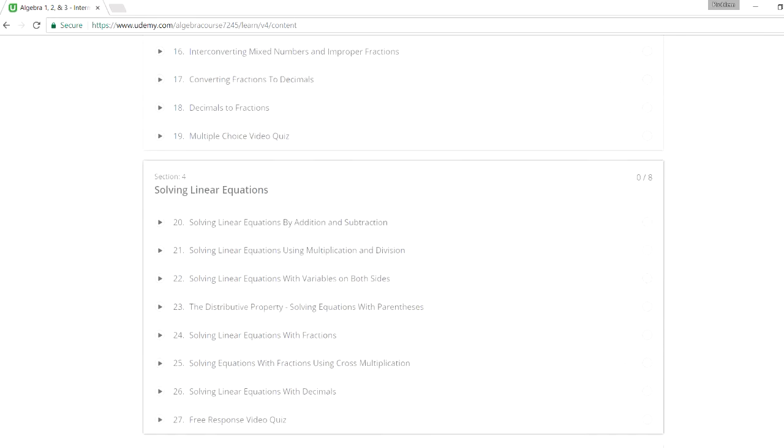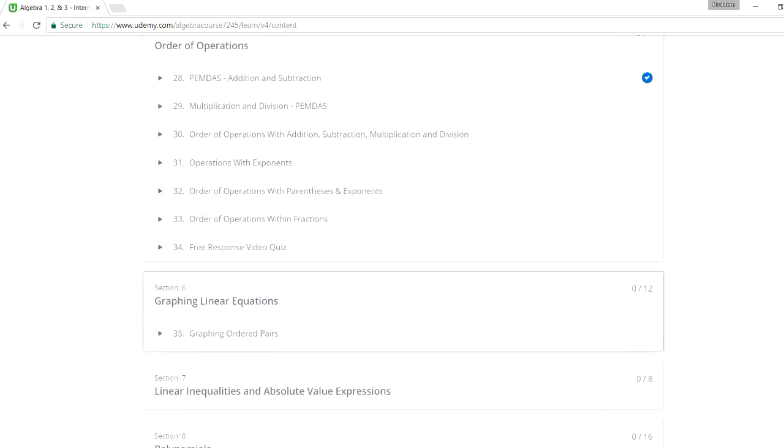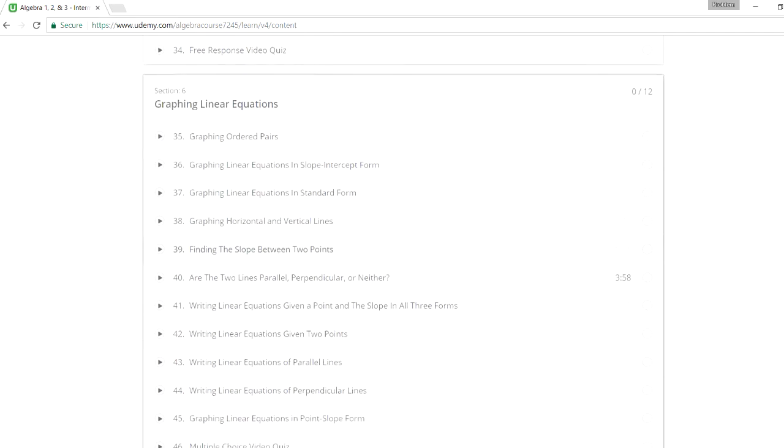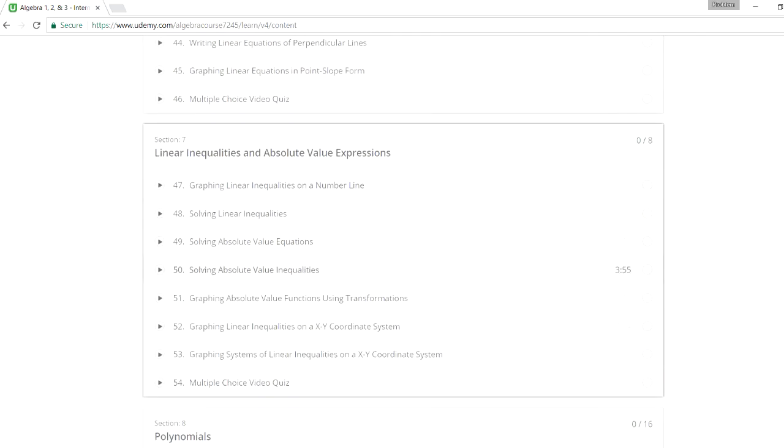Next, solving linear equations, which we covered. And just more examples if you need more help with that. The next topic, order of operations, which is also useful. Graphing linear equations. You need to know how to calculate the slope. You need to be familiar with the slope intercept form, standard form, and just how to tell if lines are parallel, perpendicular, and so forth. And there's a quiz that goes with that as well. The next topic is on inequalities and absolute value expressions, which are also seen in a typical algebra course.